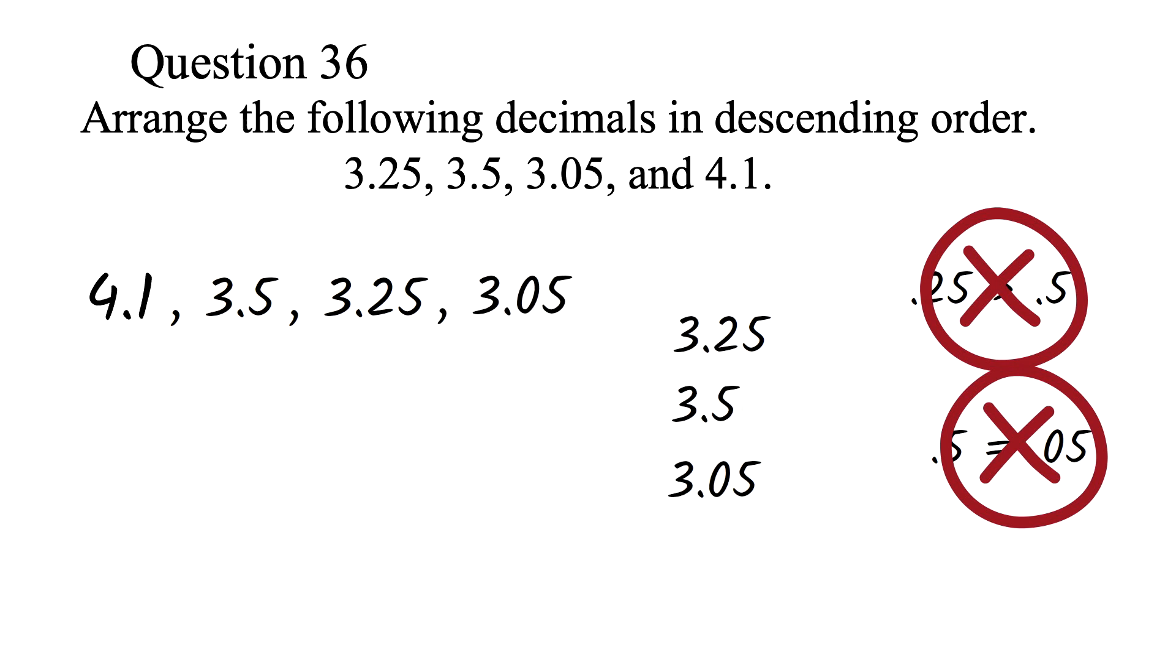A better way to compare is to realize that decimals are compared from the decimal point going to the right, one digit at a time. So here, we'll compare the 2 to the 5 and the 0. Since 5 is the largest, 3.5 will be the bigger number. Then 2 is larger than 0. So 3.25 is next. Then finally 3.05.